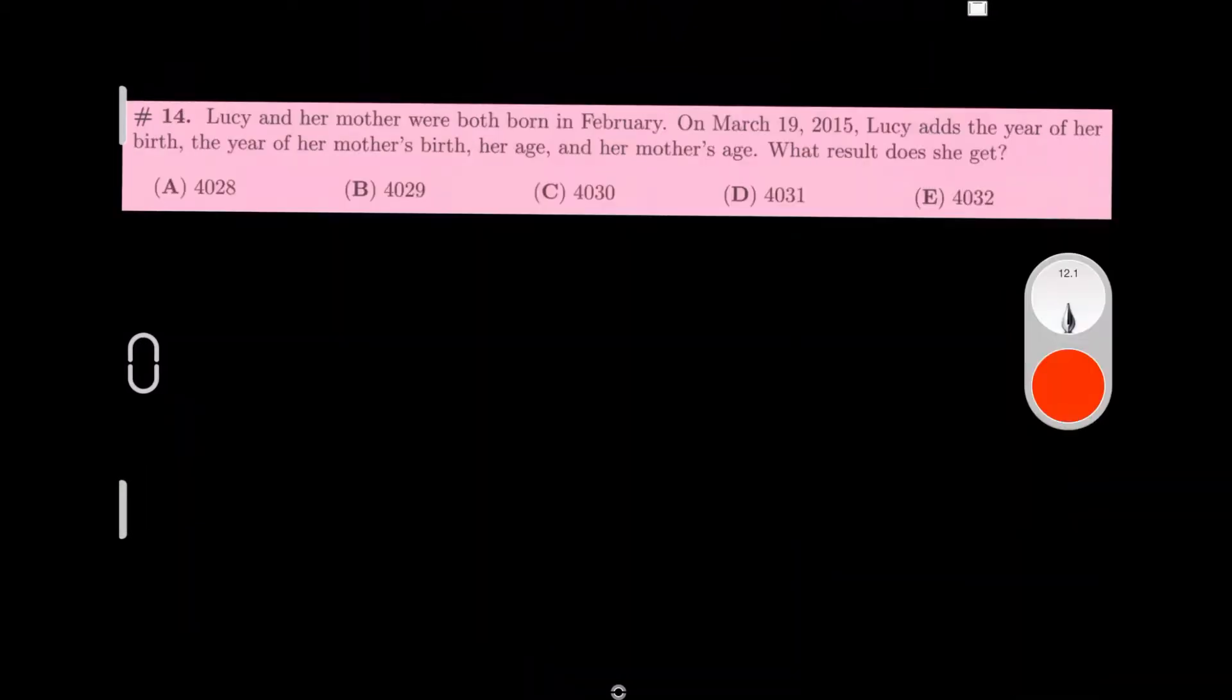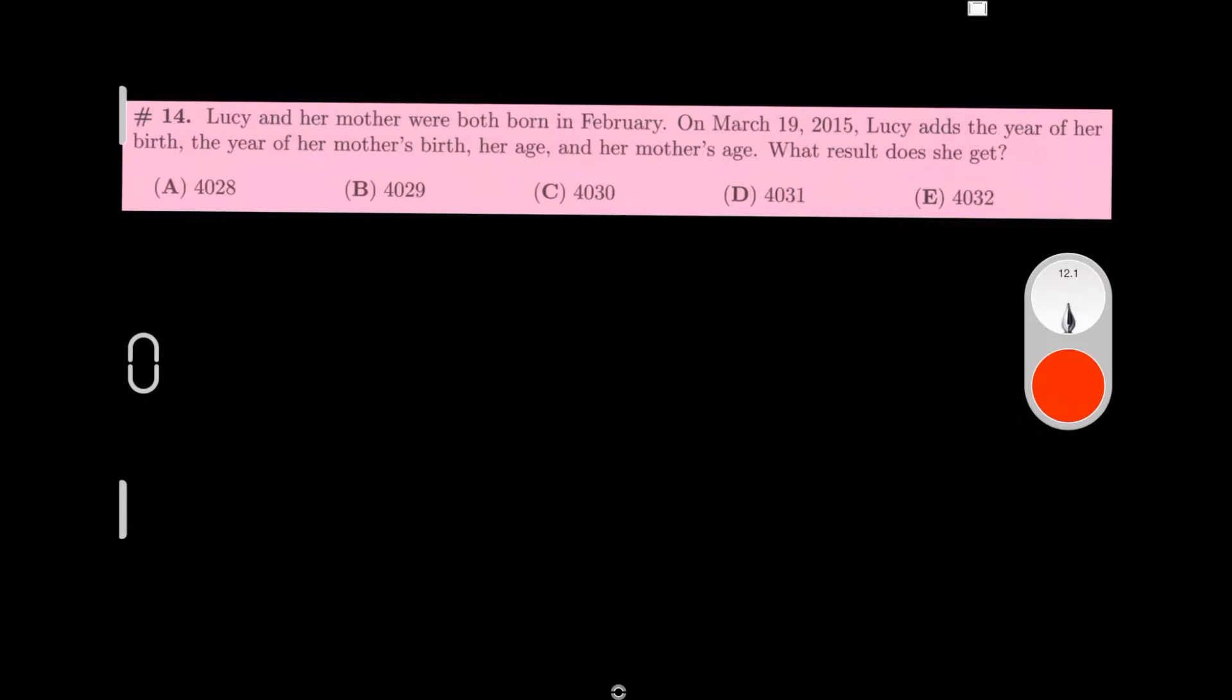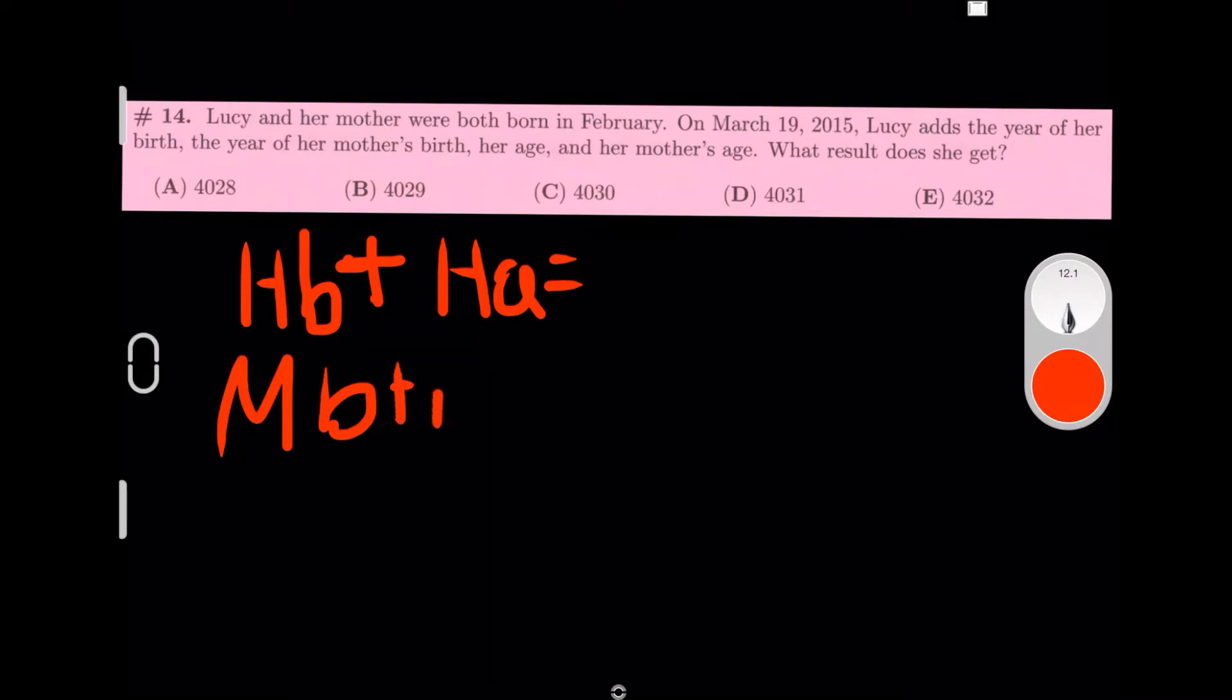Lucy and her mother were born in February. On March 19, 2015, Lucy adds the year of her birth, the year of her mother's birth, her age, and her mother's age. What is the result she gets? So what they're saying is her birth year plus her age equals something, and her mother's birth plus her mother's age equals something. They said they were both born in February, and on March 19, 2015 she recorded this.